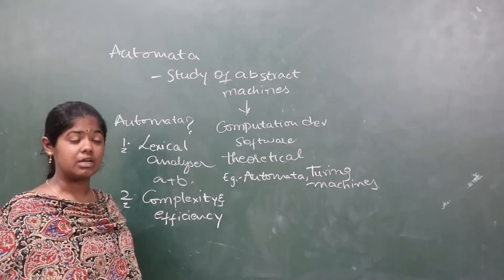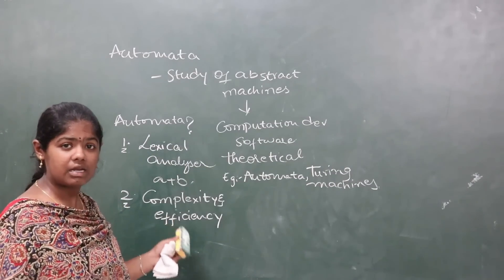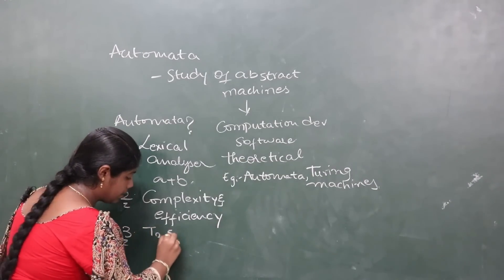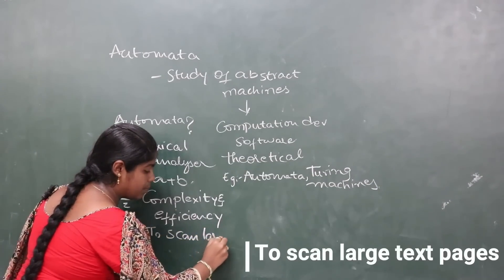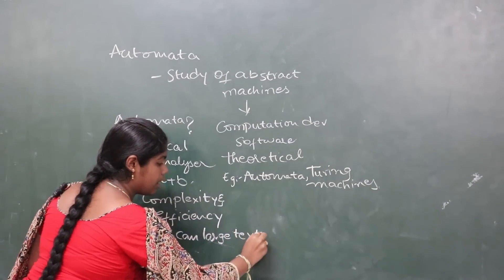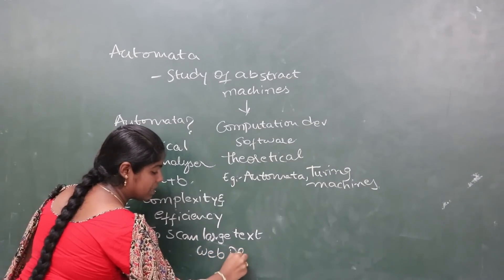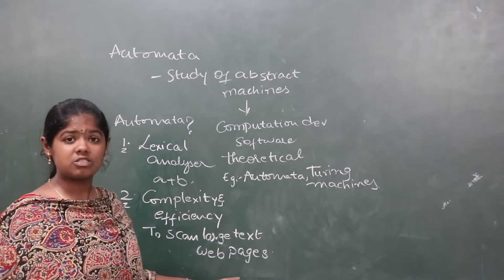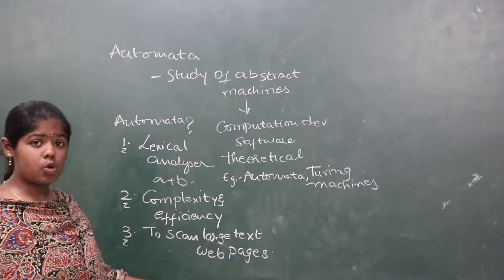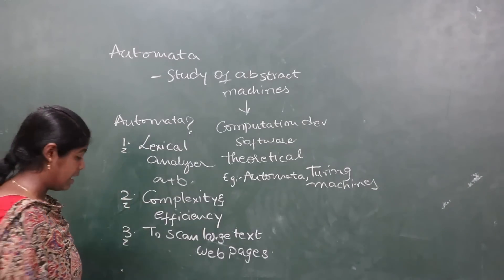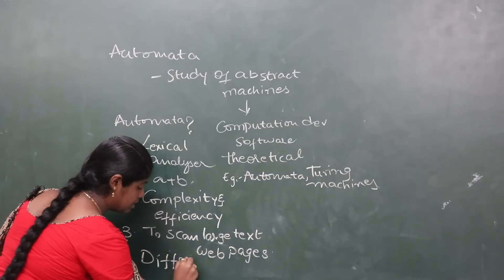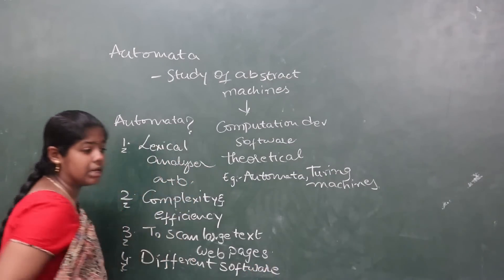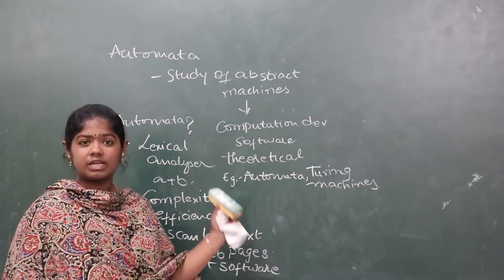The third point is to scan large text web pages. Web pages definitely contain a lot of data and hyperlinks, and hyperlinks have a lot of data. We use automata to scan these large text pages. The fourth point relates to different softwares — automata plays a major role in constructing any machine.